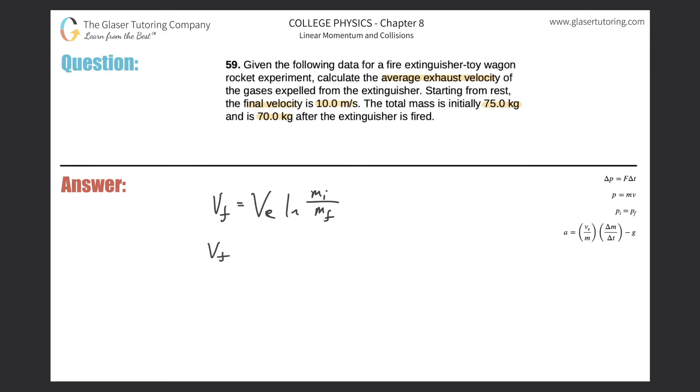So this would be the final velocity divided by the natural log of the initial mass divided by the final mass. That'll equal V sub E. So here's our equation.